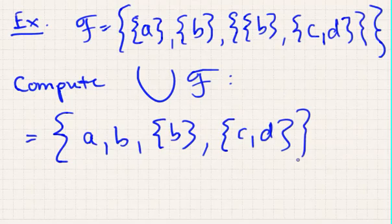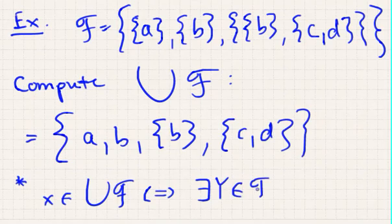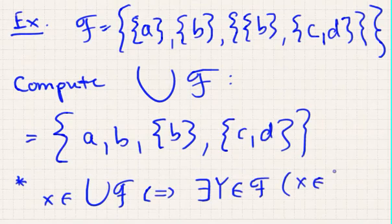And why is this true? Well, again, I'll write it again, but we know that x is in the union, if and only if there exists a y in f such that x is in y. So, the reason why A is in the union of f is because there exists a y in f, namely this set here, the set containing A such that A is in the set containing A. The same thing for B. And then for this set, the reason why this is in the union is because it's in this particular set, which is in f, and same thing with C, D.